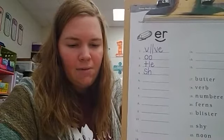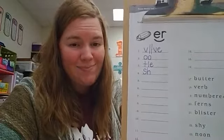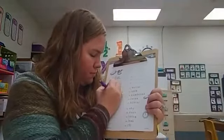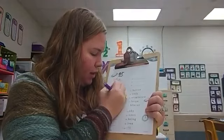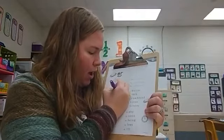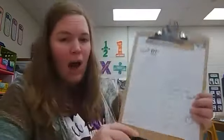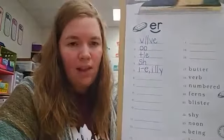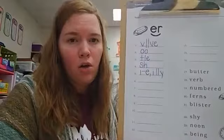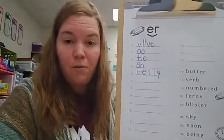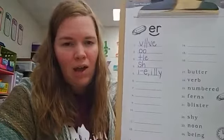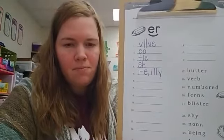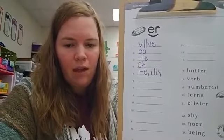Number five is I. I, consonant, E, comma, I, final, Y. Don't forget, final Y says I, like in the word cry, or the word fry. I, consonant, E, comma, I, final, Y.